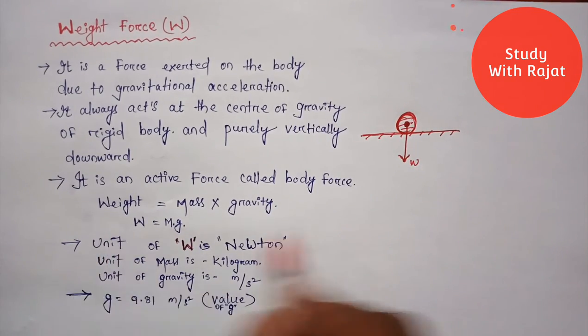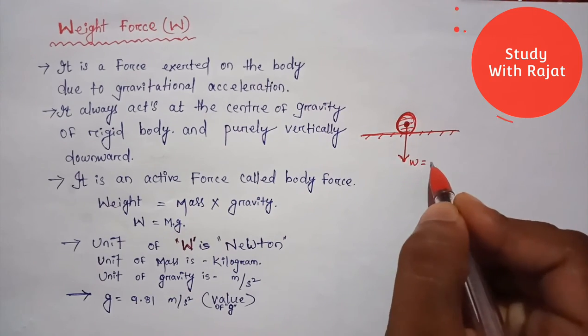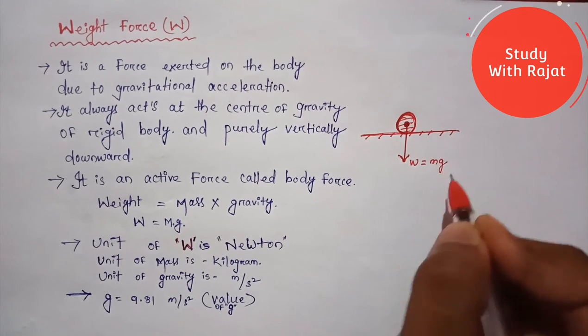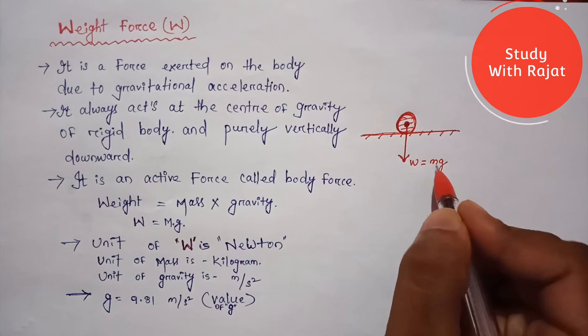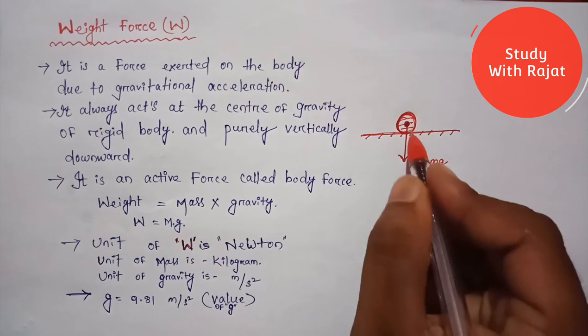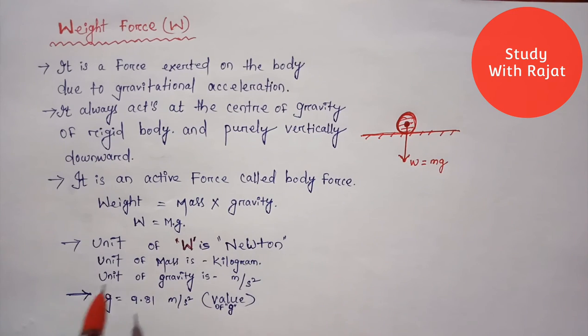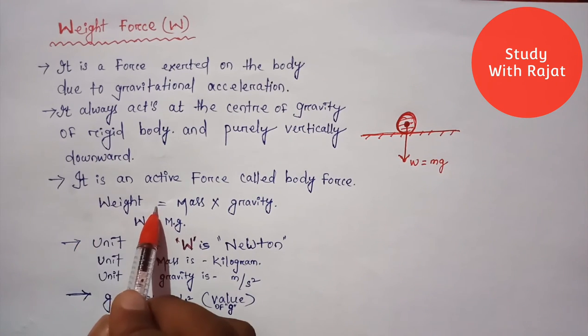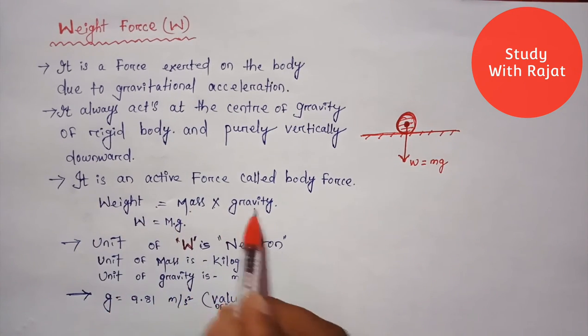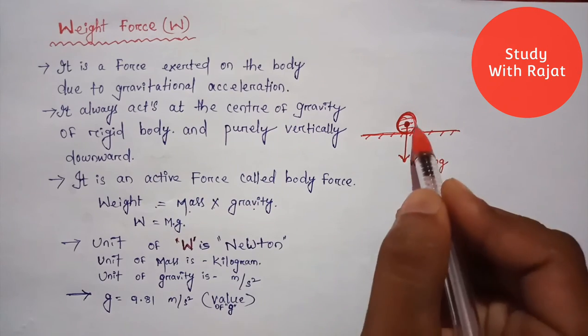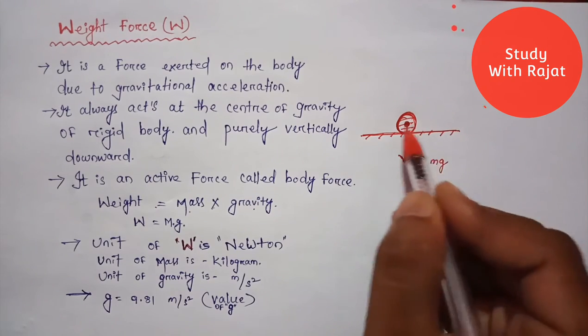We can say W is equal to MG. So what is MG? M is the mass of the body and G is the gravitational acceleration of the body. So here we can describe weight is equal to mass into gravity. So weight W of the body is equal to mass of the body into the gravity.